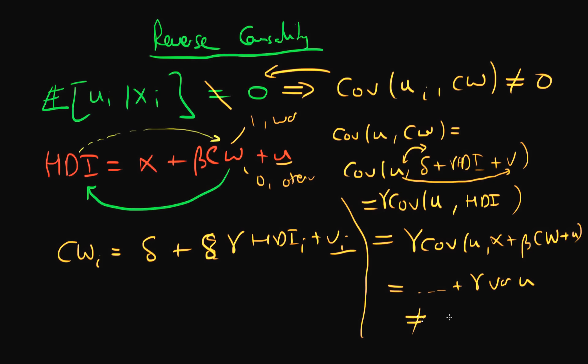We've proved that in the example where we have reverse causality acting in the opposite direction to the relationship we're trying to estimate, then we're going to have a problem whereby the zero conditional mean assumption of errors is likely going to be violated. So OLS is likely to be biased in this circumstance.